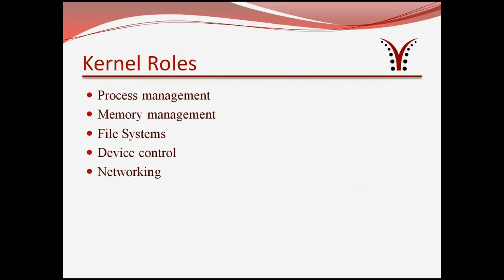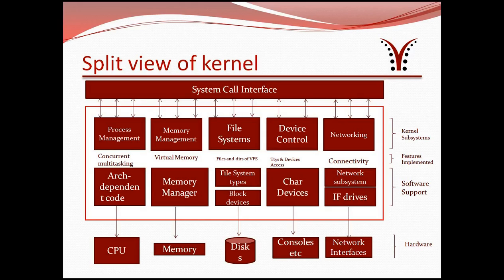The kernel roles are: process management, memory management, file system, device control, and networking. Before discussing these 5 parts, let's have a look at the diagram where all the components are marked along with other kernel entities. As you can see from the diagram, these kernel roles fall under the system call interface layer, acting as an interface between various kernel components and user space applications.